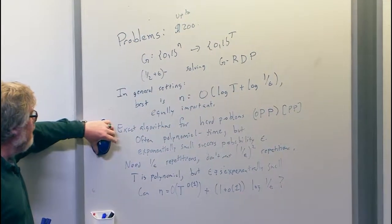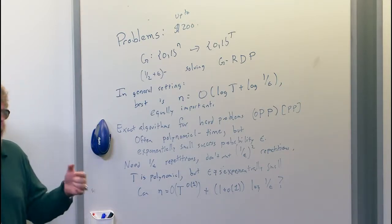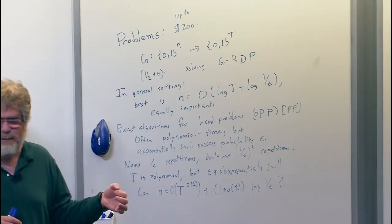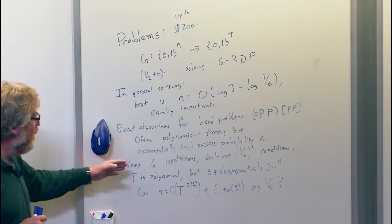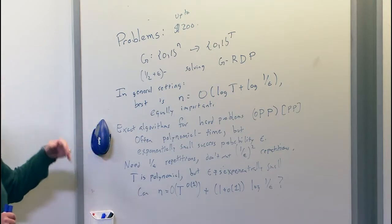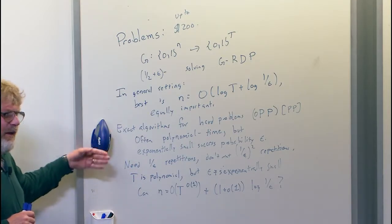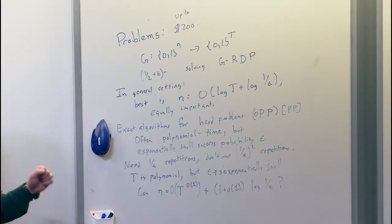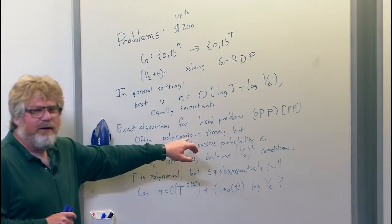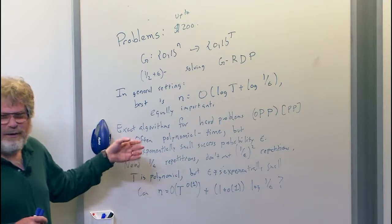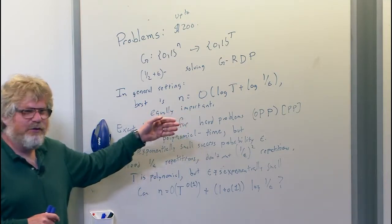They observed that many of the exact algorithms for hard problems have the following form: they're actually a polynomial-time algorithm — even though we're interested in the exact exponential time — but this polynomial-time algorithm has only an exponentially small success probability. So we have to repeat it many times, about one over the success probability times, before we're very likely to see one of these runs succeed.